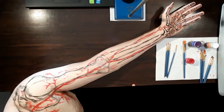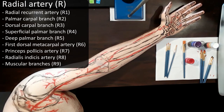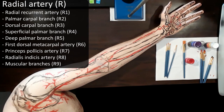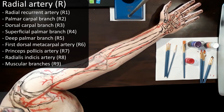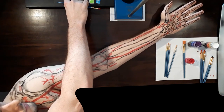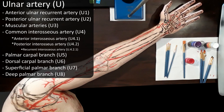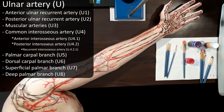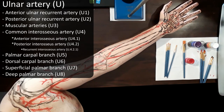Finally, in the forearm, the radial artery is going to generate eight branches: the radial recurrent artery, the palmar carpal branch, the dorsal carpal branch, the superficial palmar branch, the deep palmar branch, the first dorsal metacarpal artery, the princeps pollicis artery, and the radialis indicis artery, as well as minor muscular branches. Meanwhile, the ulnar artery is going to originate the anterior ulnar recurrent artery, the posterior ulnar recurrent artery, muscular arteries, the common interosseous artery, the palmar carpal branch, the dorsal carpal branch, the superficial palmar branch, and the deep palmar branch.